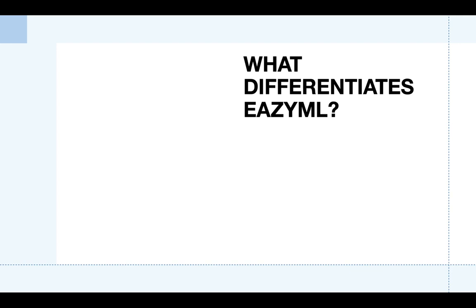What differentiates EasyML from other platforms are three fundamental but very powerful features. First, EasyML is a transparent ML platform. Most machine learning platforms are opaque — they don't explain the reasons why they predict the way they did, nor do they explain how they are processing your data. EasyML explains itself at every step, covering data traceability and displaying the key reasons for its predictions in an easily understood form. This is called explainable artificial intelligence.